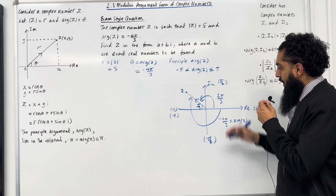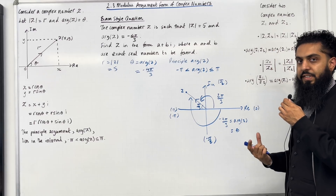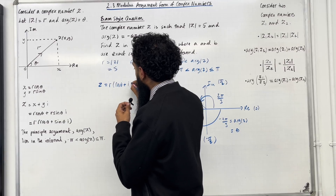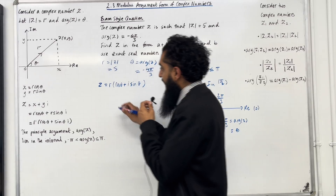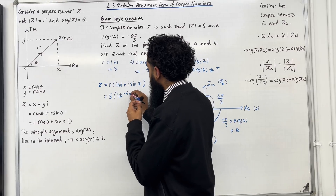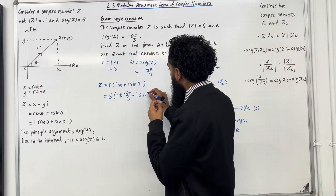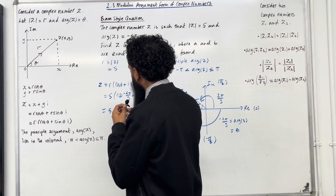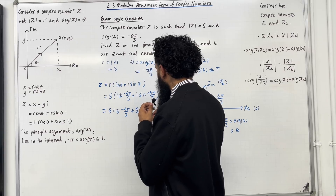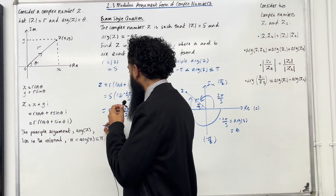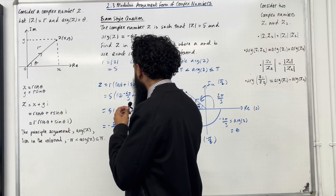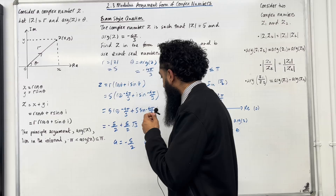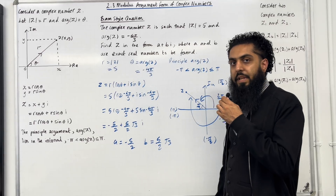Going back to the question: z = r(cos θ + i sin θ) = 5(cos(−4π/3) + i sin(−4π/3)). Expanding: z = 5 cos(−4π/3) + 5 sin(−4π/3) · i. Evaluating gives z = −5/2 + (5√3/2)i. So a = −5/2 and b = 5√3/2. This completes the exam-style question.